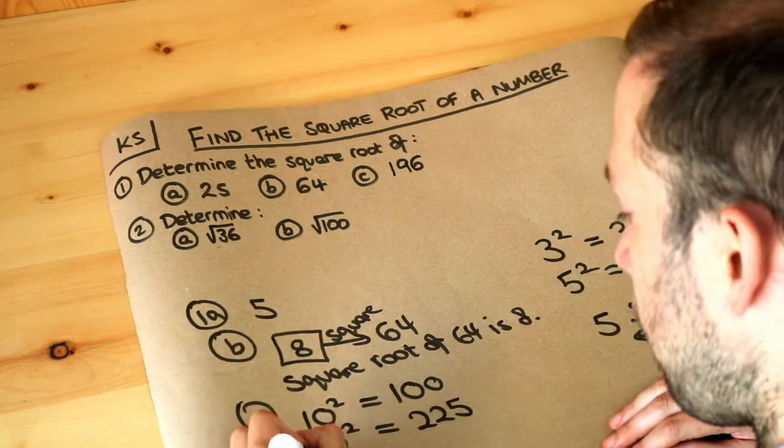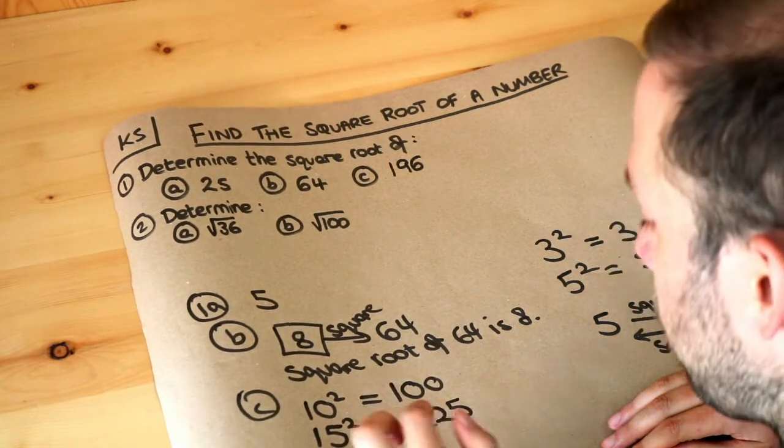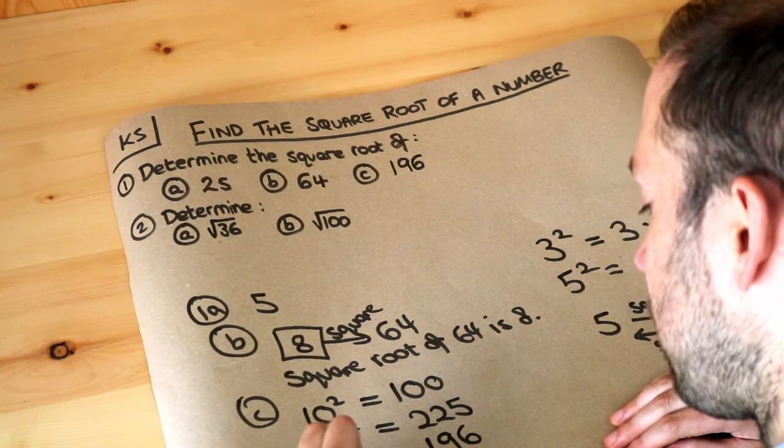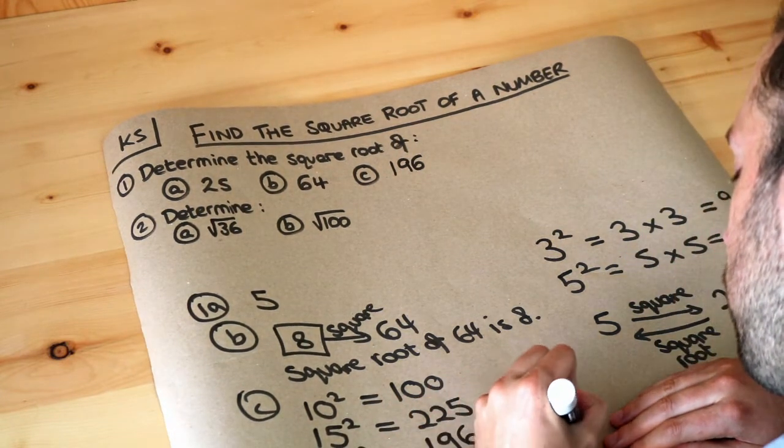Well if we try 14, 14 squared, you could always do this on a calculator, 14 squared gives you 196. And therefore, the square root of 196 is 14.